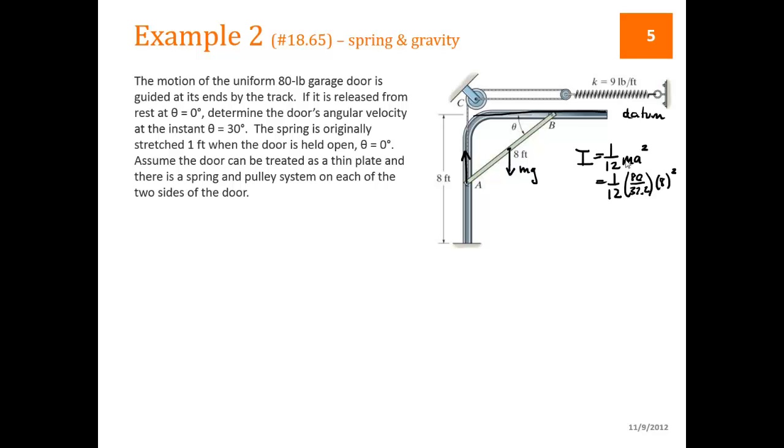So let's start writing things out here. In position 1, we have no kinetic energy because it's at rest. And our potential energy has no gravitational component because we chose our datum to be at that point. And we have a spring component due to the fact that the stretch is 1 foot. So that's 1/2 of k times 1 foot squared. So that's our initial position.